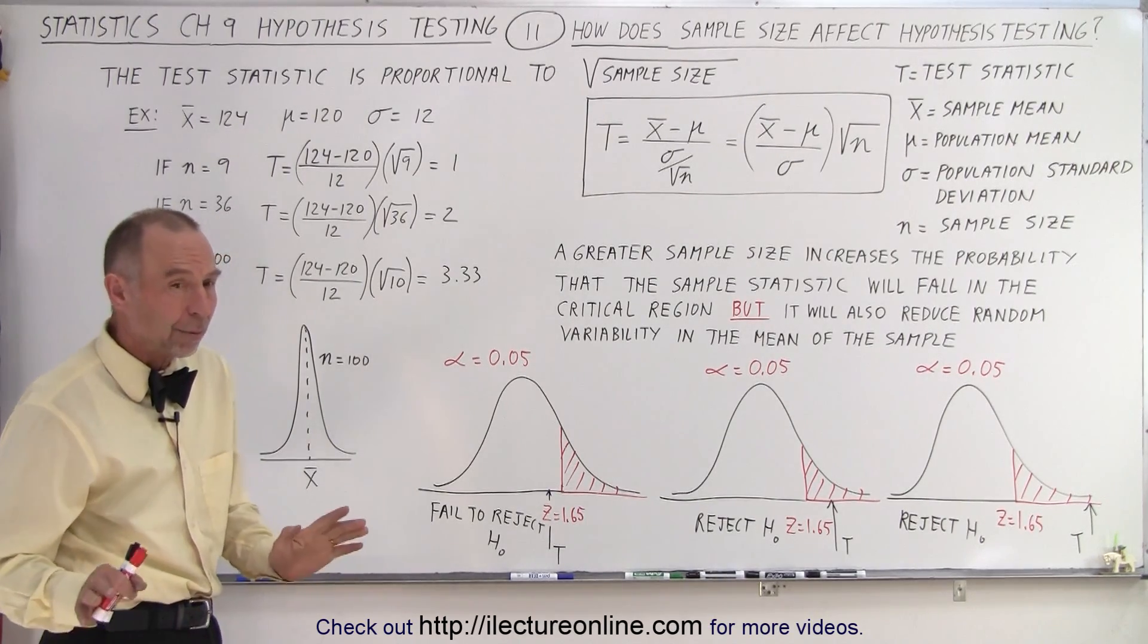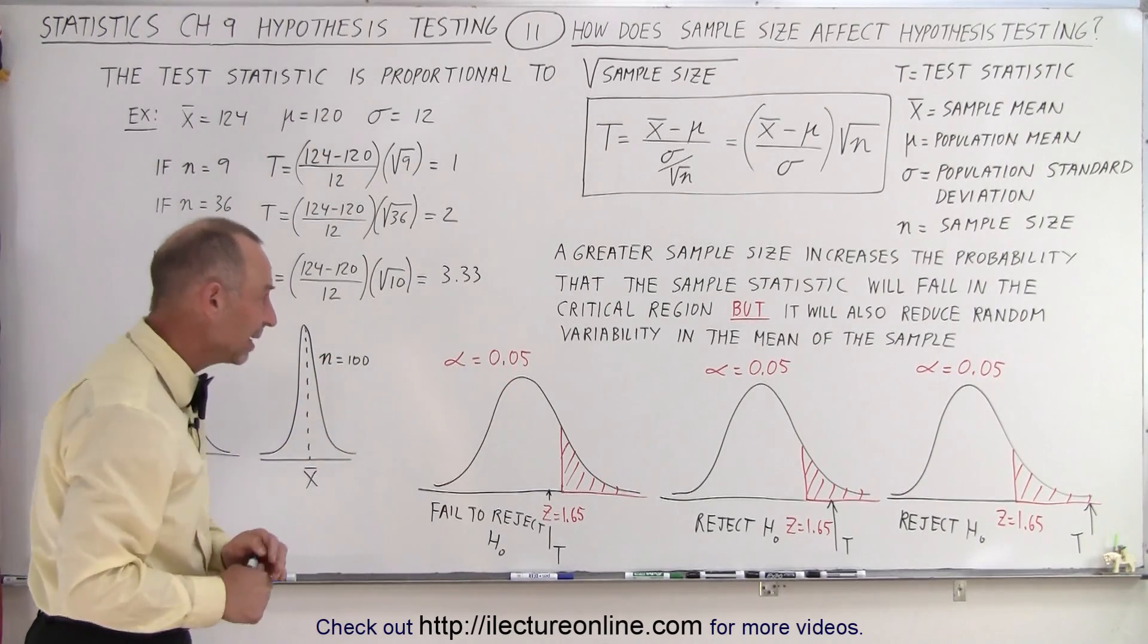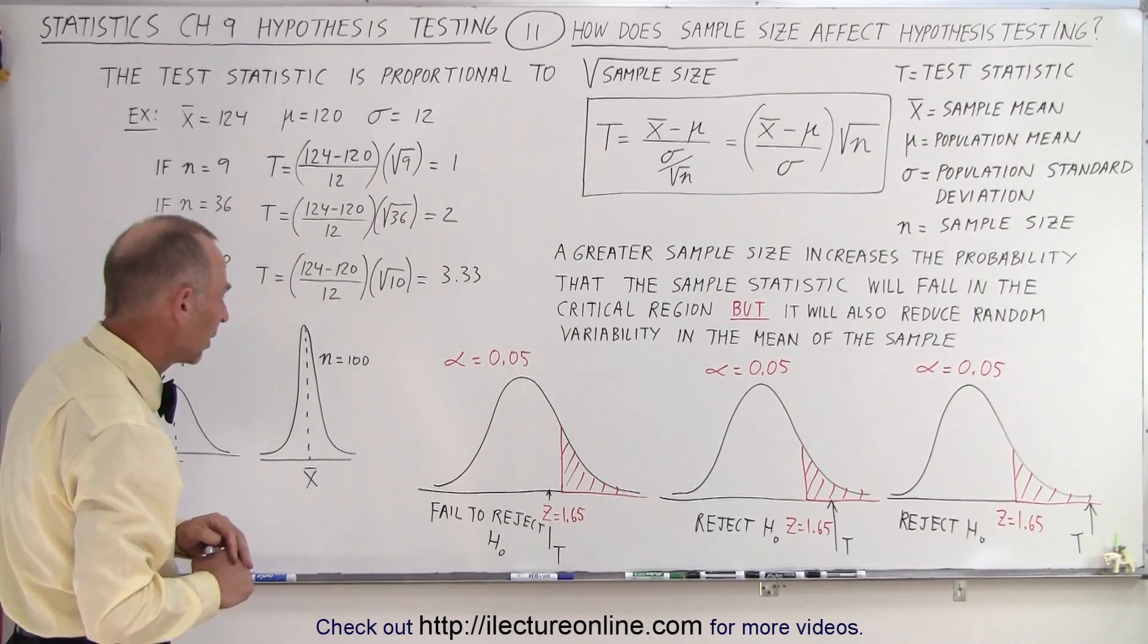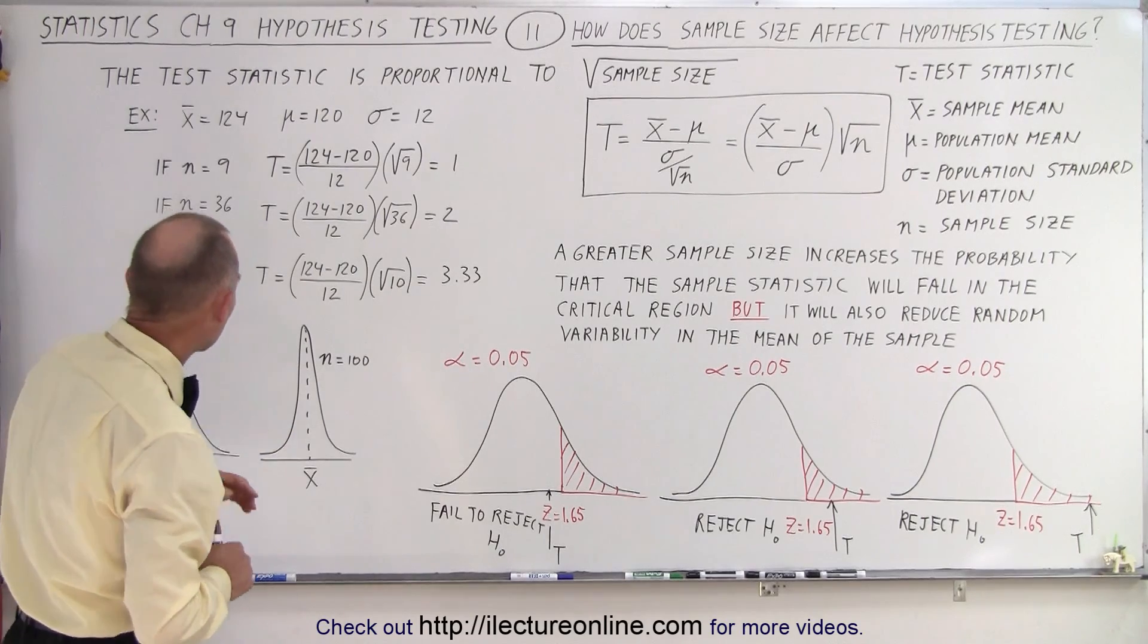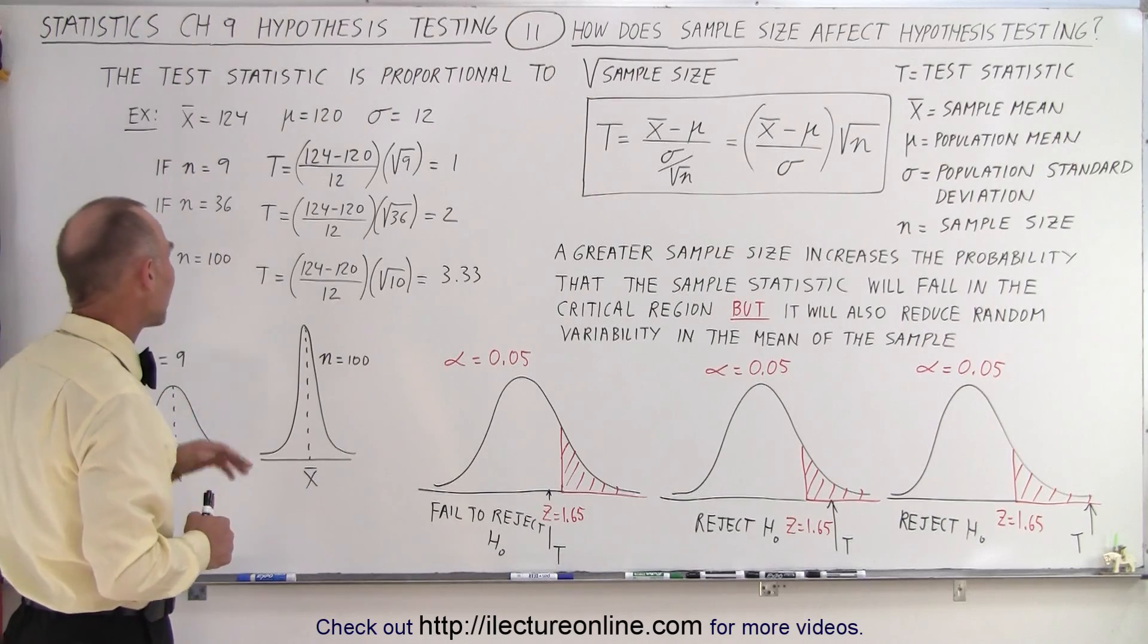And we have a 5% probability of having made an error in that because we set the level of significance to equal to 5%. But now let's say that we change the size of the sample to 36.